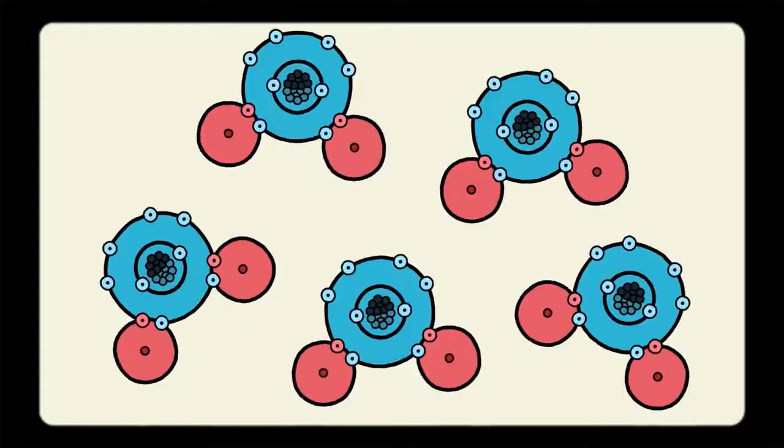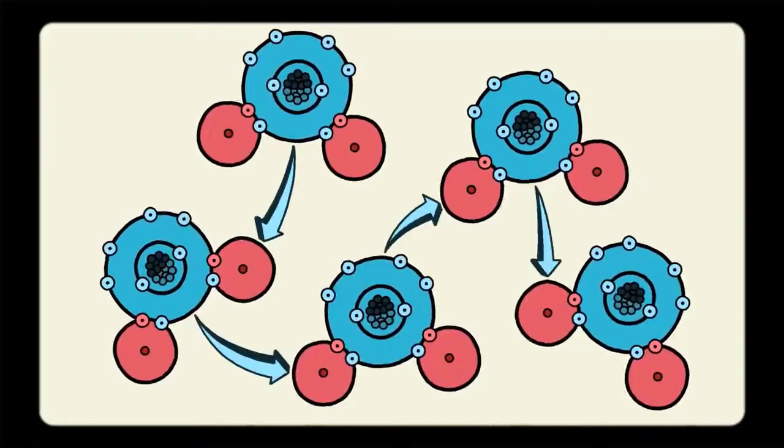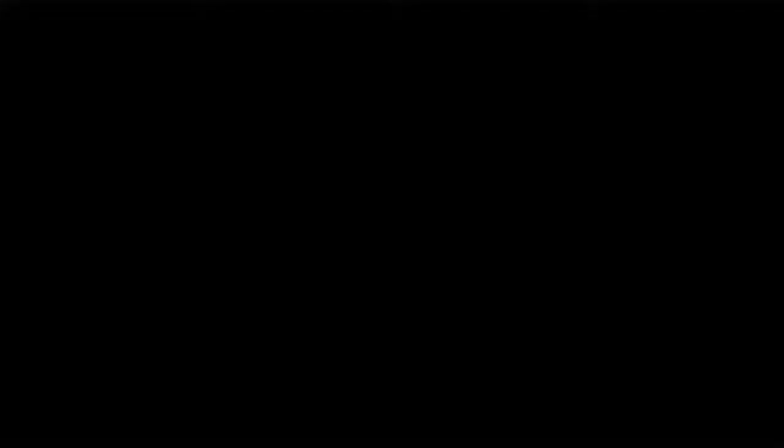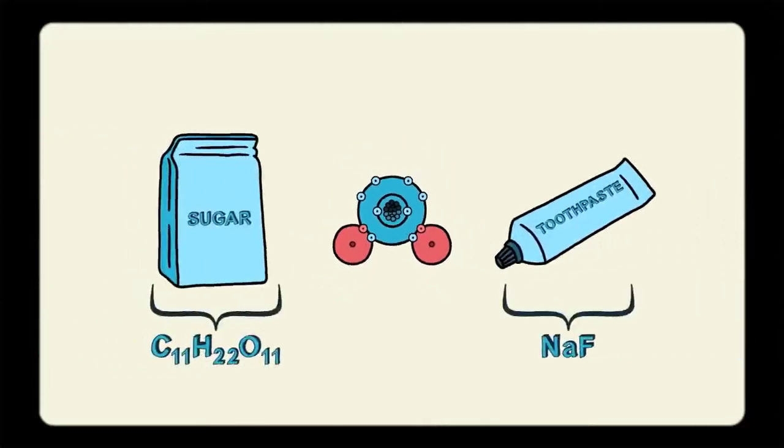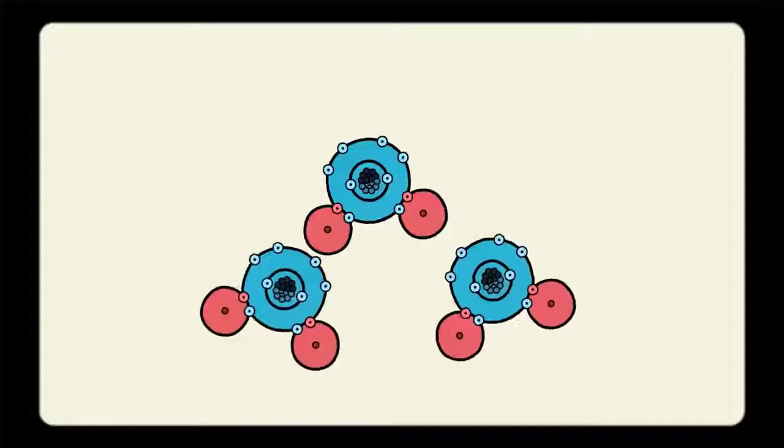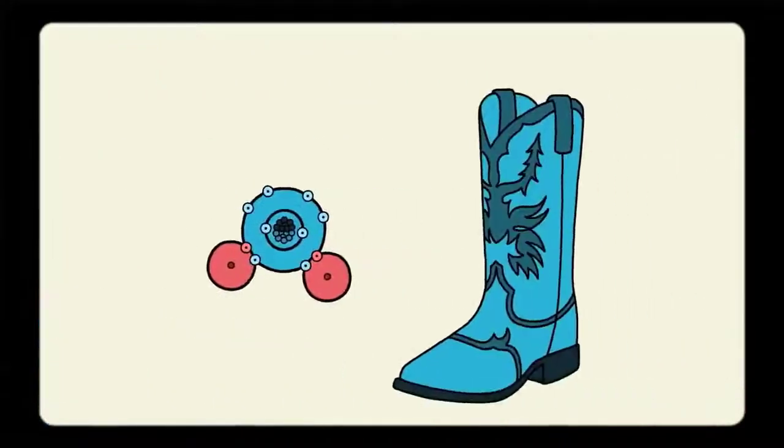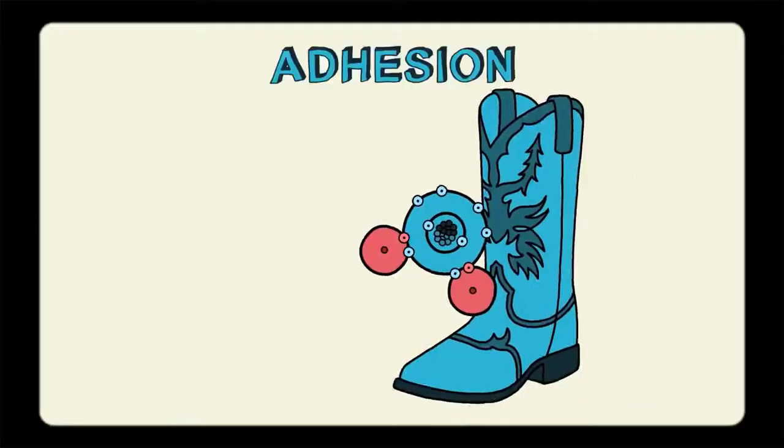Since negative and positive attract, that oxygen is attracted to the hydrogen atoms in neighboring water molecules. A special type of bond forms between water molecules, known as a hydrogen bond. Hydrogen bonds don't just happen in water either. They can form between a water molecule and different substances that are polar or ionic. Water's ability to stick to itself is called cohesion, while water's ability to stick to other substances is called adhesion.